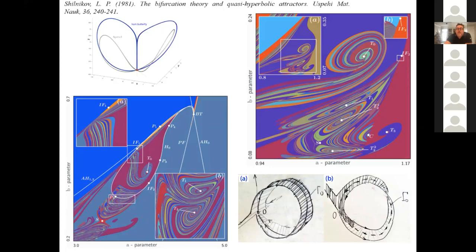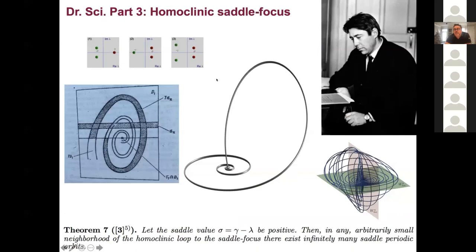Now we arrive at the result that is not folklore anymore — this is called the Shilnikov saddle-focus. When you have a pair of complex conjugate eigenvalues nearest to the imaginary axis, the existence of a single homoclinic orbit implies there are countably many saddle periodic orbits nearby. In the West we'd say you have countably many Smale horseshoes. This is just a hand drawing of Leonid's showing how the presence of the homoclinic orbit implies countably many Smale horseshoes.